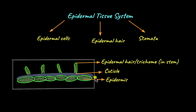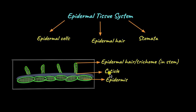The epidermis of leaves and stems are covered by a waxy layer called the cuticle. The function of the cuticle is to prevent water loss from the plants by the process of transpiration. Cuticle is noticeably absent in roots — can you think of a reason why? If cuticle were present in roots, then roots cannot absorb water. That's why roots do not have cuticle.